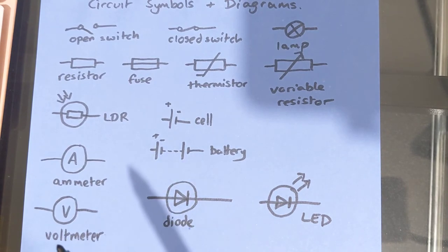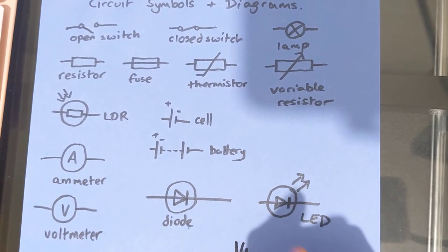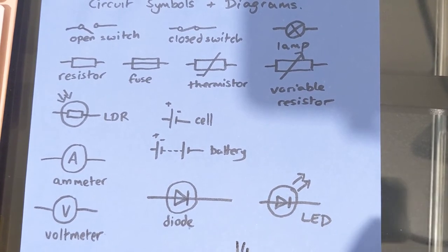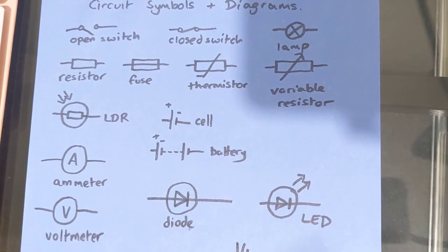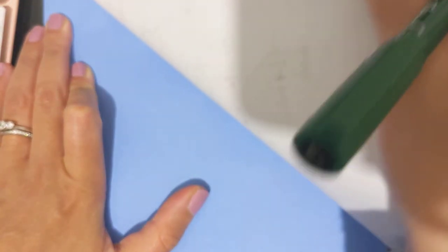So that's 14 circuit symbols to know. So learn one a night for two weeks, great idea. You will get a question on this. It's almost guaranteed that you will get a question on one of these, and there's no way of knowing which one, so you've got to learn them all because you don't want to lose easy marks.